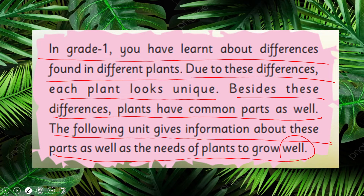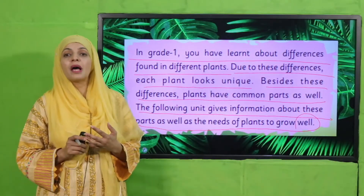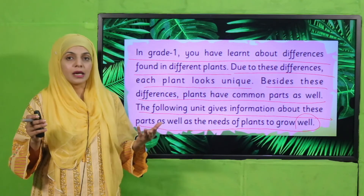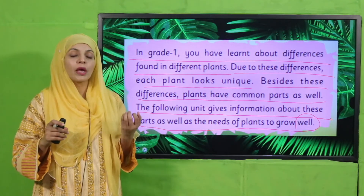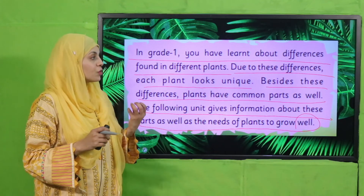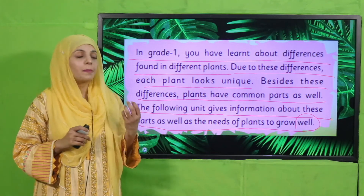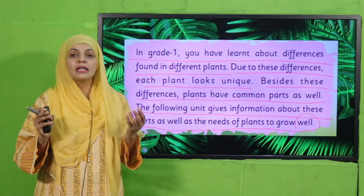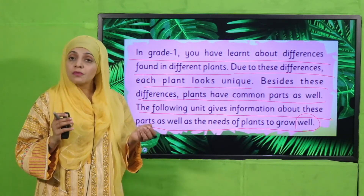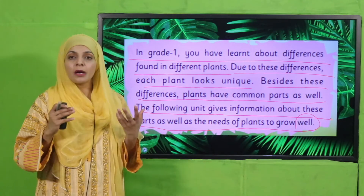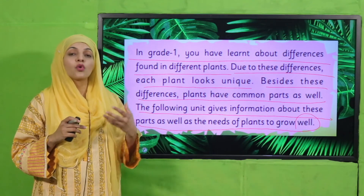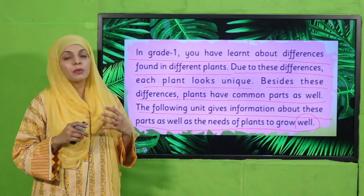My dear students, in Grade 1 we have already studied about plants — how different plants are, and how they look different from each other. We will also look at what the needs of plants are and how each plant is unique. Plants have common parts like stem, root, and leaves, and we will learn what functions these parts perform and what plants need in order to grow.